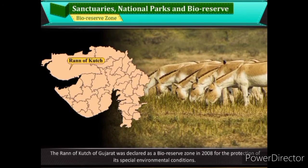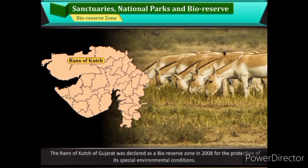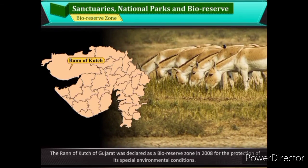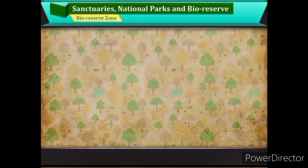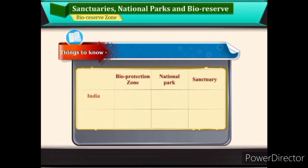The Rann of Kutch of Gujarat was declared as a bio-reserve zone in 2008 for the protection of its special environmental conditions. India has 18 Bio-Protection Zones, 103 National Parks, and 531 Sanctuaries. Gujarat has 1 Bio-Protection Zone, 4 National Parks, and 23 Sanctuaries.